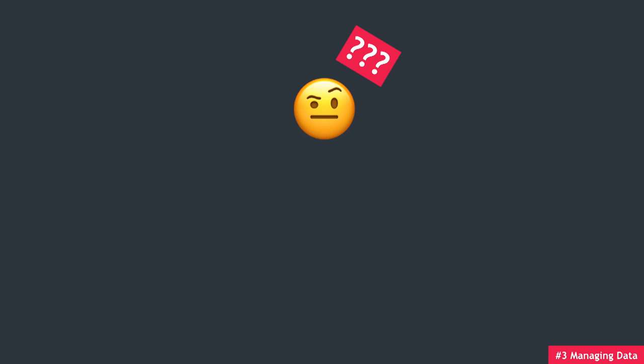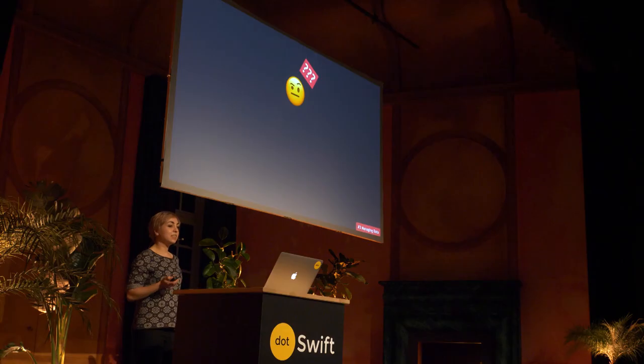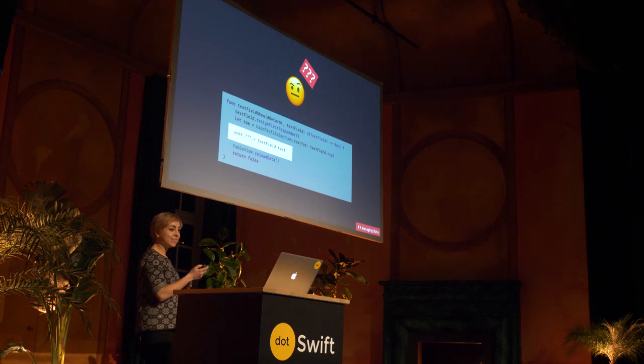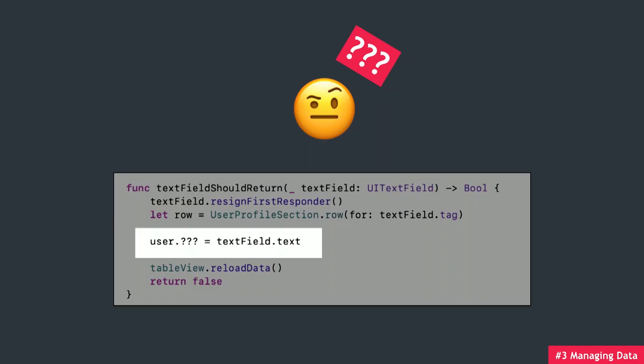So I added a static property called allRows to my UserProfileSection that flat-maps the rows for each section into one array, and added another static function that gives a unique tag identifier. To get the row for a specific tag, we can just return the row at that tag's index. Then we assign the tag to our cell's text field in cellForRow, and then we know which enum it's associated with. But I still have to use an ugly switch to decide which user property to actually update, and this really doesn't feel like it should be the responsibility of this method.